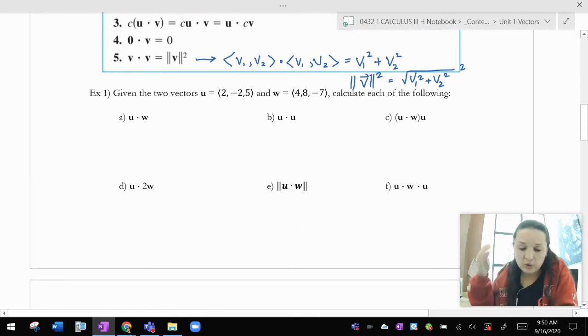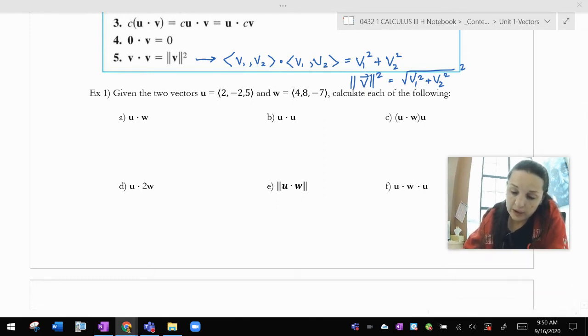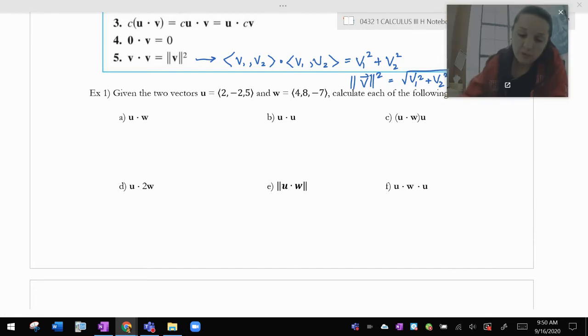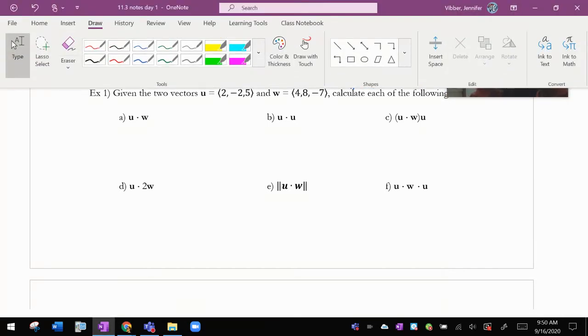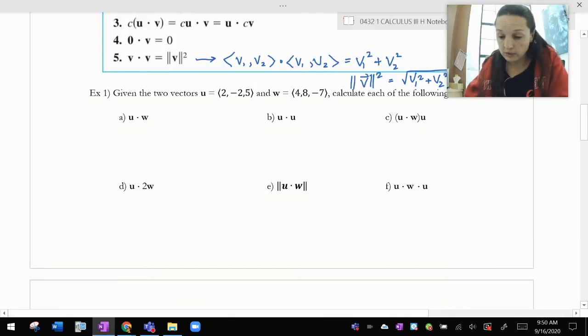So now, given these two vectors, calculate each of the following. So u is 2, negative 2, 5. w is 4, 8, negative 7. We're going to calculate each of the following. So if you feel like you know what you're doing, feel free to go ahead and then scrub through this video to see if you were correct.